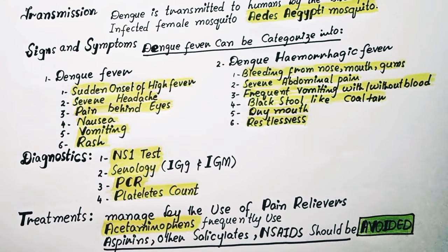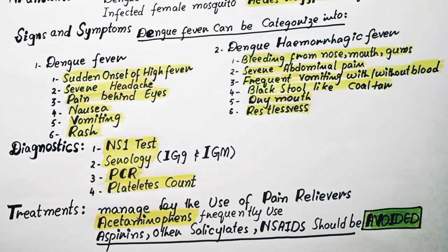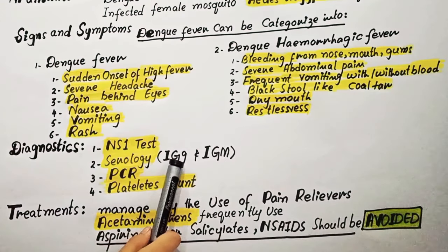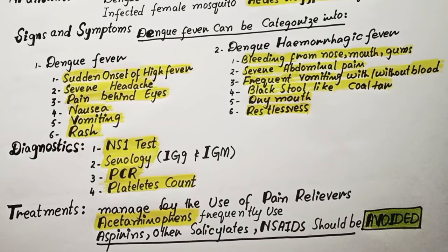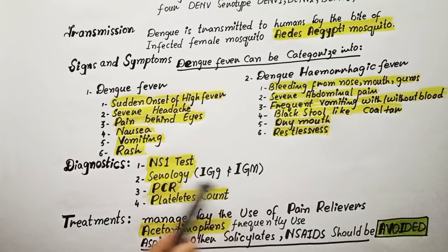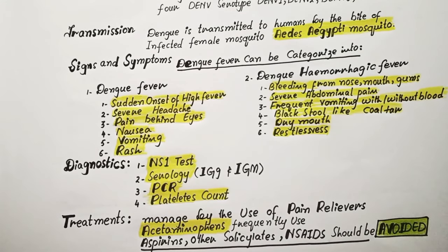If the fever has been present for five to six days, IgG and IgM tests can be performed. If both IgG and IgM are positive, it indicates a current infection. If only IgM is positive, it also indicates a current infection. PCR can be done at any time.